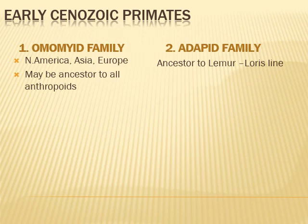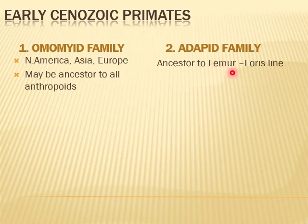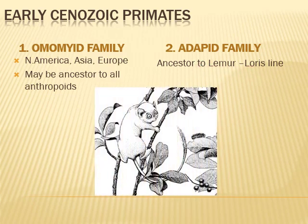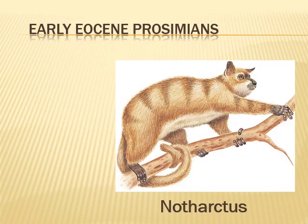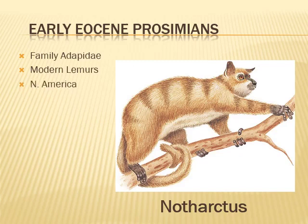Members of two families of early Cenozoic primates are considered ancestors of prosimians and anthropoids. The Omomid family inhabited North America, Asia, and Europe and were considered possible ancestors to Anthropoids. While members of the Adapid family are considered ancestors to the Lemur-Loris line. Notharctus, belonging to family Adapidae, is an extinct genus from the early Eocene and resembles modern lemurs. It is well known from complete fossil remains found in Europe and North America.